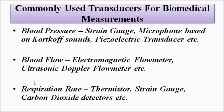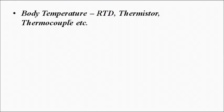The commonly used transducers for biomedical measurements include: for blood pressure — strain gauge, microphone based on Korotkoff sounds, and piezoelectric transducers. For blood flow rate — electromagnetic flow meter, ultrasonic Doppler flow meter, and laser Doppler flow meter. For respiration rate — thermistor, strain gauge, pressure sensor, and carbon dioxide detectors. For body temperature — RTD, thermistor, and thermocouple, as they are essentially temperature sensors.